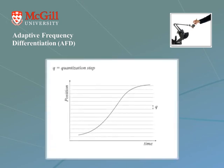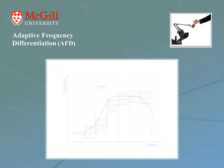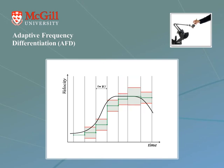Optical encoders, by nature, quantize the measured value. This signal is further sampled by the digital controller, which can have up to a quantization step error. When it comes to backward differentiation, this error is magnified by the sampling frequency, which produces significant noise.